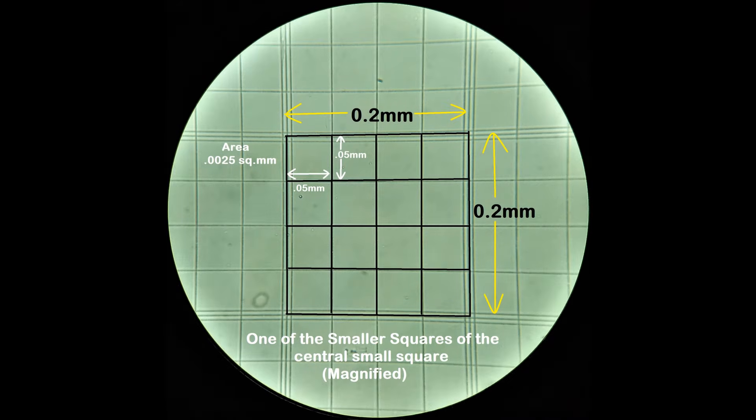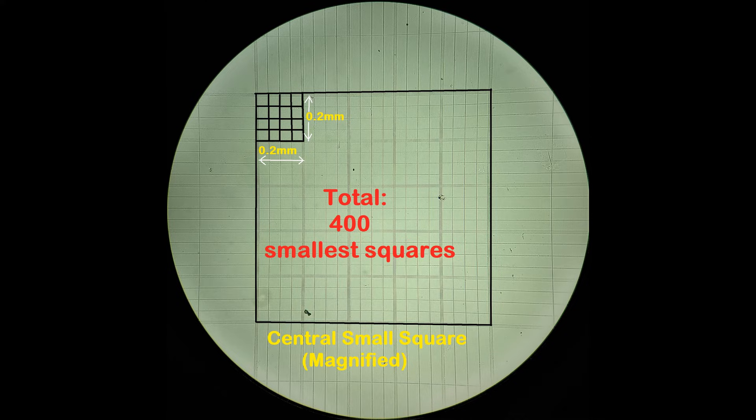Each of these smaller squares is further subdivided into 16 smallest squares. Each of these 16 smallest squares have a dimension of 0.05 by 0.05 mm and an area of 0.0025 mm². The central small square therefore comprises of a total of 400 smallest squares.